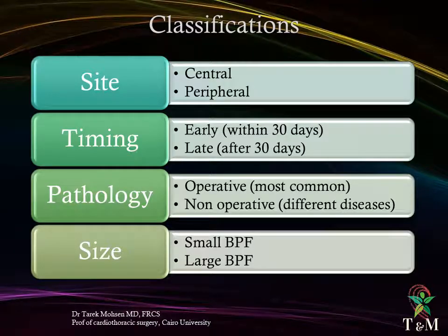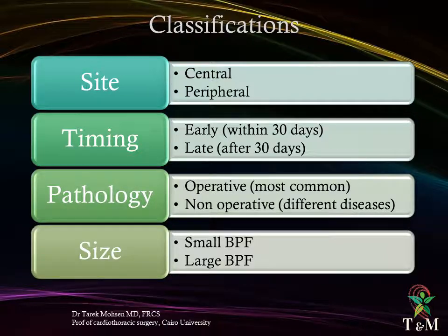Bronchopleural fistula can be classified according to its site, timing, underlying pathology, and size of the fistula. Accordingly, bronchopleural fistula can be central or peripheral. It may occur early — within 30 days post-operative — or late, after 30 days post-operative. The pathology may follow a surgical intervention, which is the most common, or non-operative causes following different lung diseases. It may be small or large.